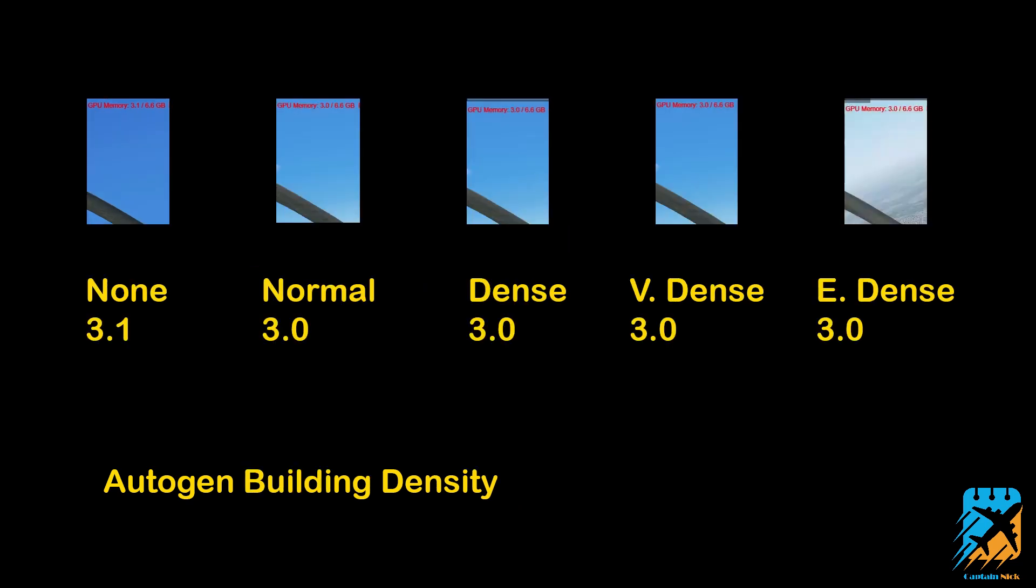Looking at auto-gen building density, same thing as the last four. 3.1 at none, normal at 3.0, dense at 3.0, very dense at 3.0, extremely dense at 3.1. That none is probably realistically the same. Seeing the pattern here, everything on that right side in that little box with the auto-gen stuff seems to not really play a whole lot with your VRAM as far as in my testing. But obviously, every single one of these, the further you push it right, the more it's going to push your frames. My suggestion is if you're having VRAM issues, auto-gen may not be the place to look, but I am no expert. Just going by the testing I've done here.